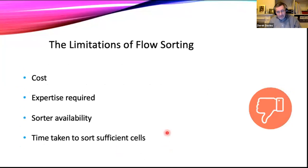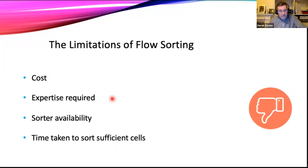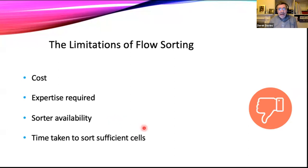There are some limitations. Cell sorters tend to be a little bit more costly than analyzers because of that extra sorting module. They often require more expertise, so many of you who go to a core facility may have your sort done by a member of the core facility staff. And it sometimes depends on sort availability — in some of our sorters at the Crick we have to think about booking maybe two to three weeks in advance. Also, it can take a little bit of time to get the number of cells back that you want, depending on your downstream application.